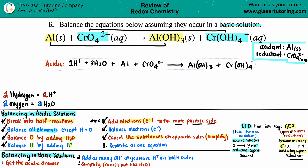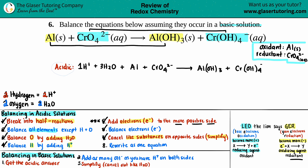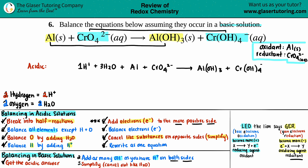All the hard work got us down to that acidic answer. Now we move to the basic solution steps. Step two of the basic procedure says: add as many OH⁻ as you have H⁺ on both sides. Find the H⁺ — that's what makes it acidic. Here I have one H⁺, so I add one OH⁻ to both sides.